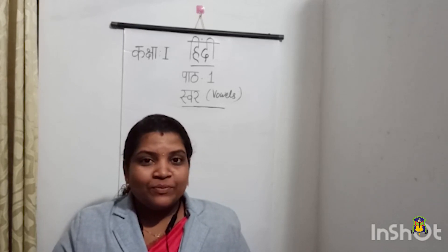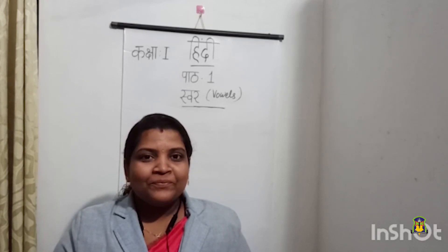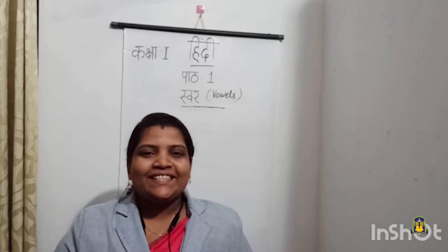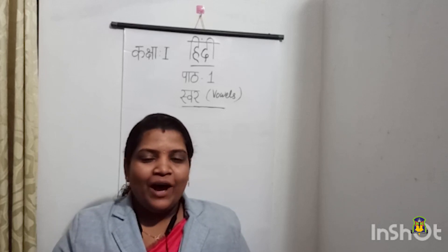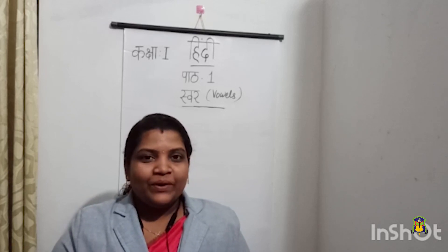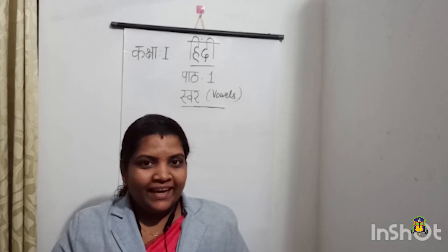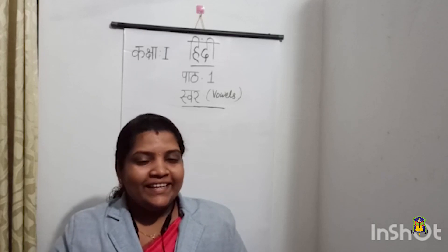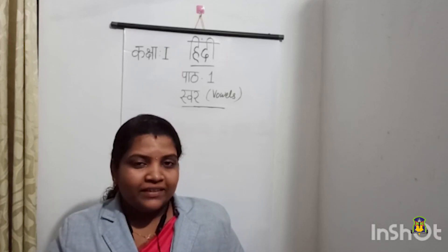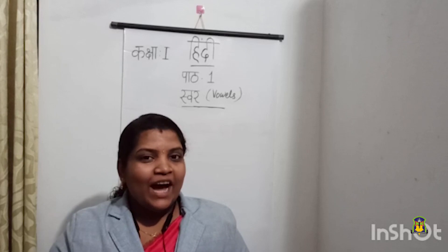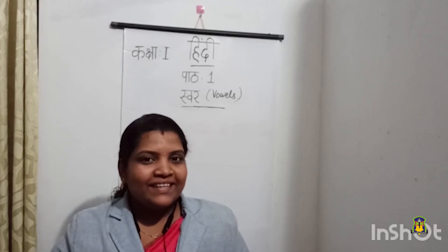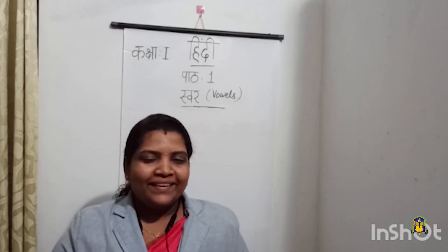Which are the letters we learnt? O and AU. O say AUKALI — AUKALI means motor. AU say AURAT — AURAT means woman.